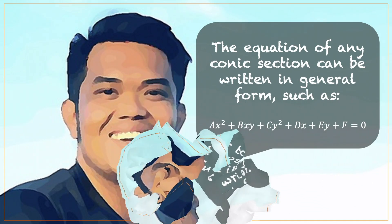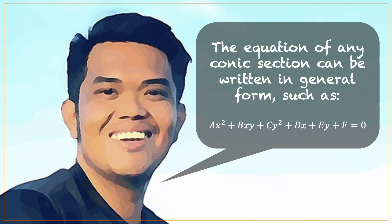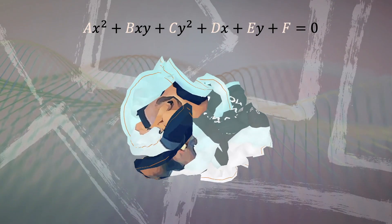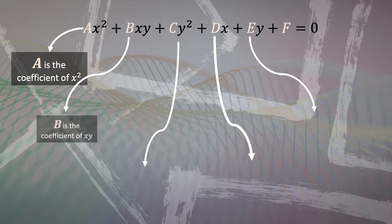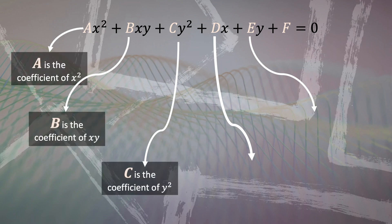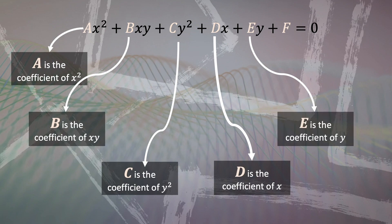So, what's the general form of the equation of a conic section? It's Ax² + BXY + Cy² + DX + EY + F = 0. In the general equation, A, B, C, D, and E are the coefficients of the algebraic terms X squared, XY, Y squared, X, and Y, while F is a constant term.